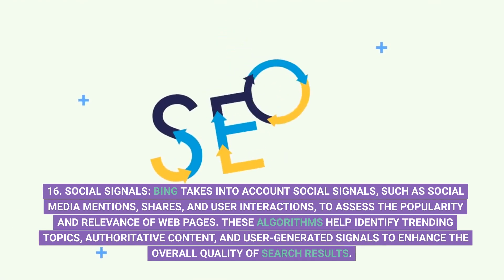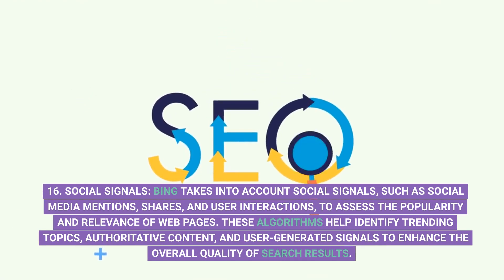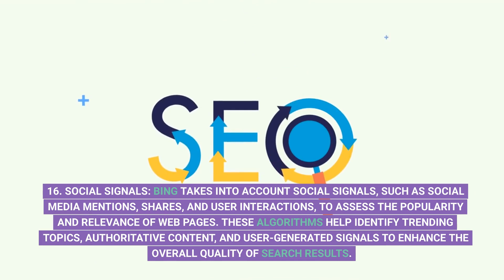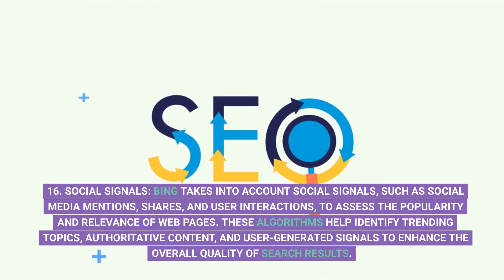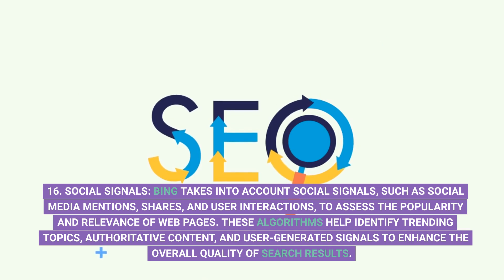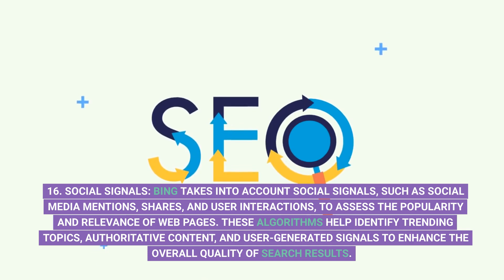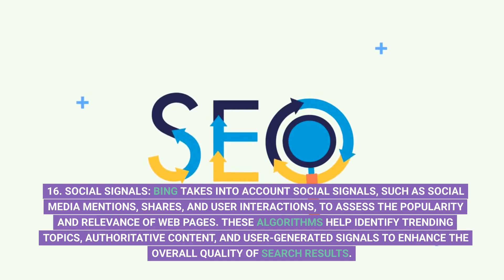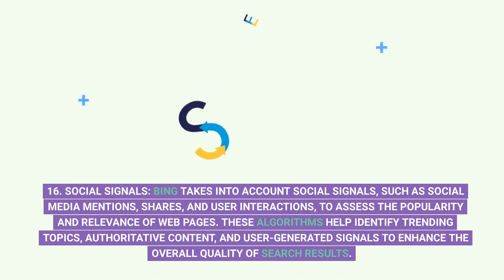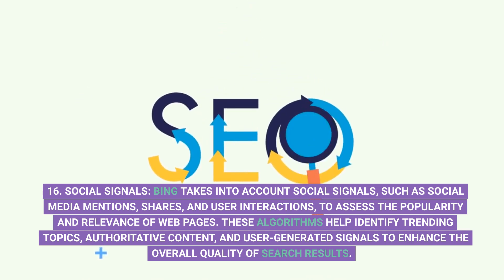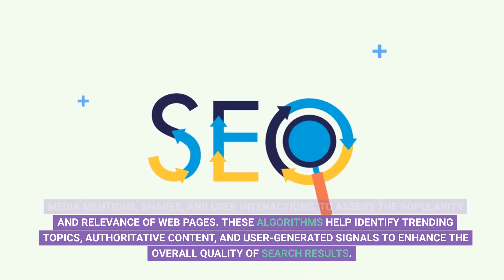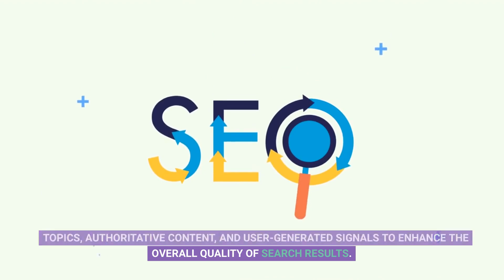16. Social Signals. Bing takes into account social signals, such as social media mentions, shares, and user interactions, to assess the popularity and relevance of web pages. These algorithms help identify trending topics, authoritative content, and user-generated signals to enhance the overall quality of search results.